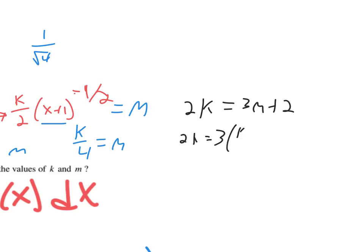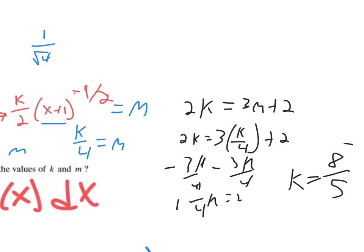2K equals 3K over 4 plus 2. And you've got just a small little equation to solve. Subtract 3K over 4 from both sides. You've got 1 and 1 fourth K equals 2. So K is going to be 8 over 5.